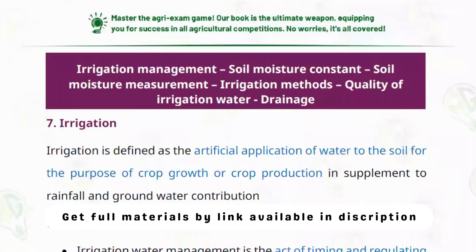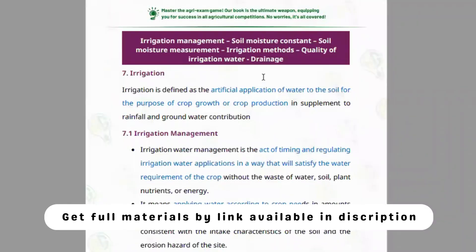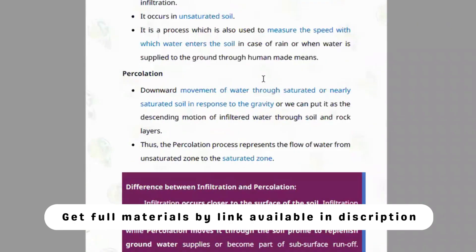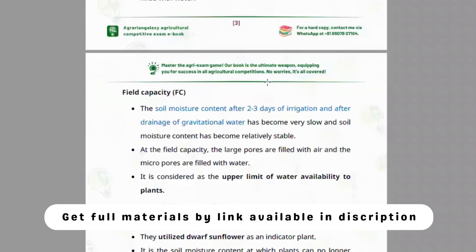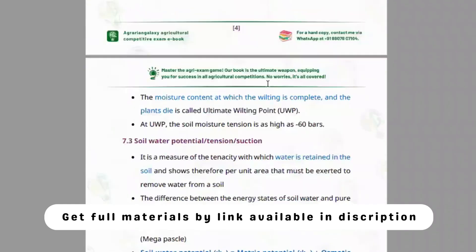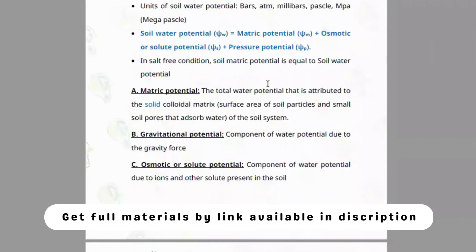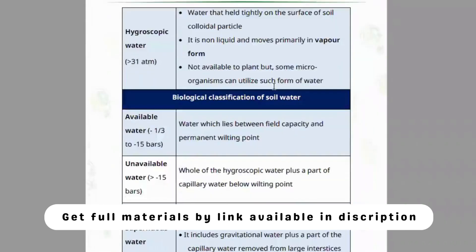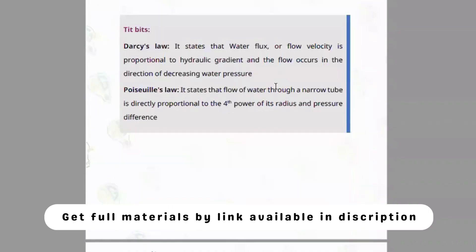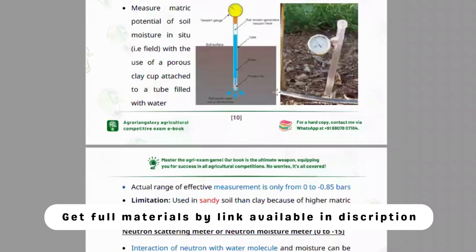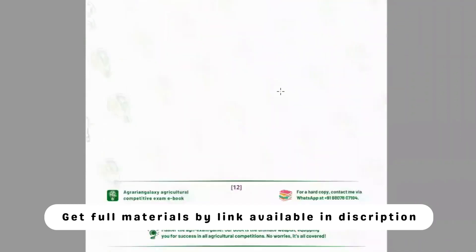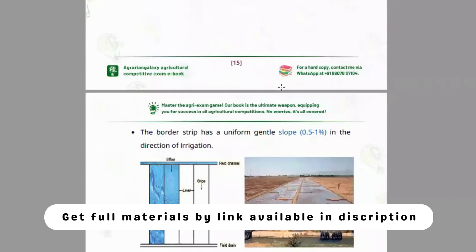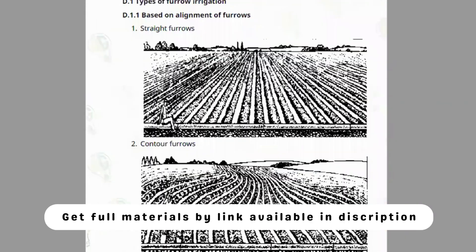Next is irrigation management — soil moisture constants, soil moisture measurements, irrigation management, and important irrigation terminologies. Covered topics include field capacity, permanent wilting point, ultimate wilting point, soil water potentials, and classification of soil water. Measurement of soil moisture using pressure chambers and types of irrigation including surface irrigation, sprinkler, basin, and border irrigation are all clearly illustrated.